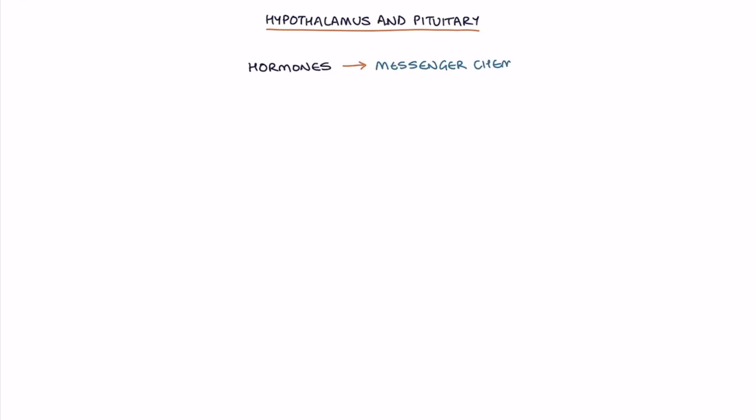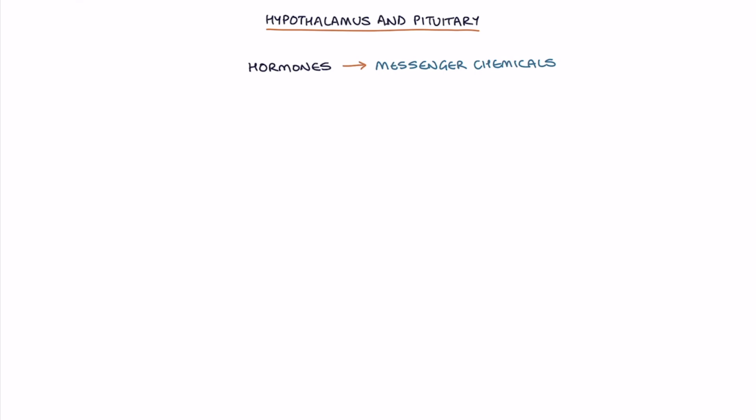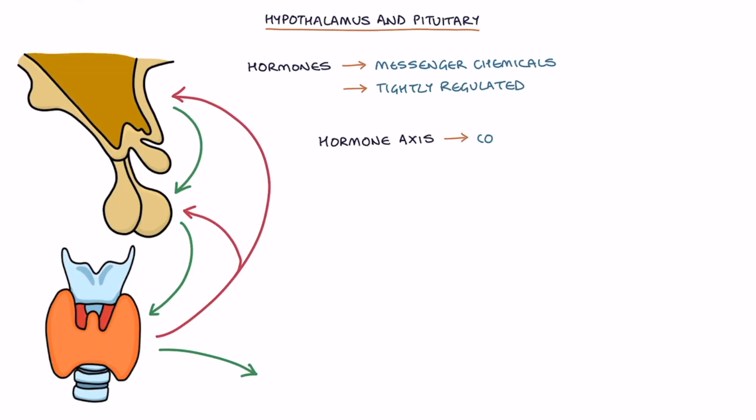Hormones are messenger chemicals that travel in the blood between the organs and tissues regulating many processes. Too much or too little of a hormone can have significant consequences so it's important to keep them tightly regulated. A hormone axis controls the amount of a hormone in the system.